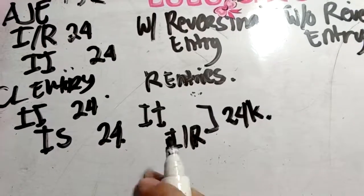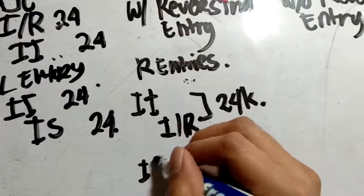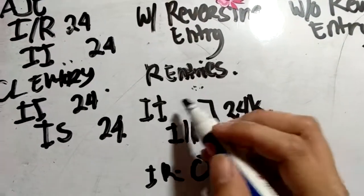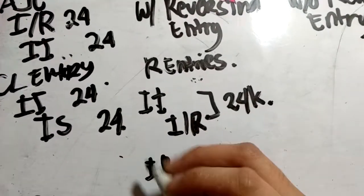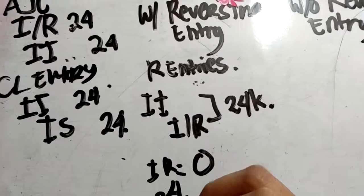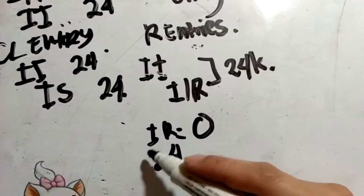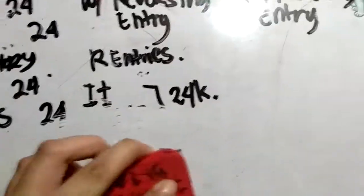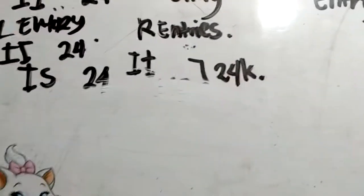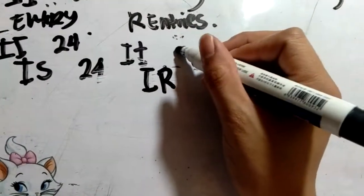So if you look at it, after the reversing entry the Interest Receivable balance is 0. And the Interest Income has an abnormal balance of negative 24, because it was debited — that's the abnormal balance. That is the interest income after the reversing entry: Interest Income 24k, Interest Receivable 24k, reversed.